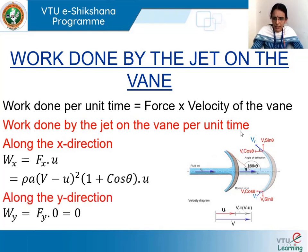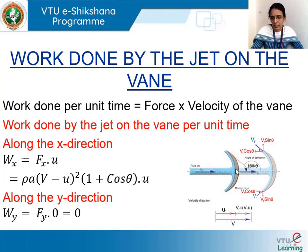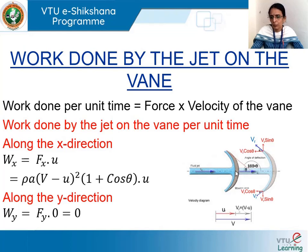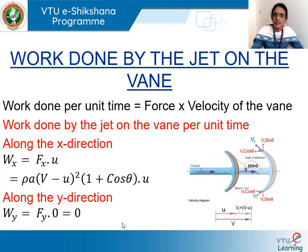The same can be extended for the y direction. Work done along y equals the force component Fy multiplied by the vane velocity component along y. Since the jet is purely horizontal, Fy = 0, and the vane moves purely along x, so the velocity component along y is also zero. Therefore, both Fy and the y-velocity component are zero, making the work done along the y direction equal to zero.